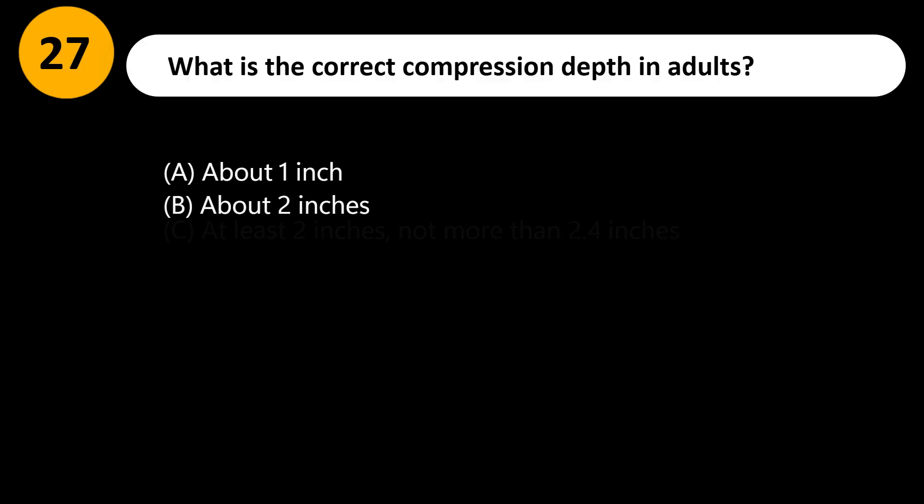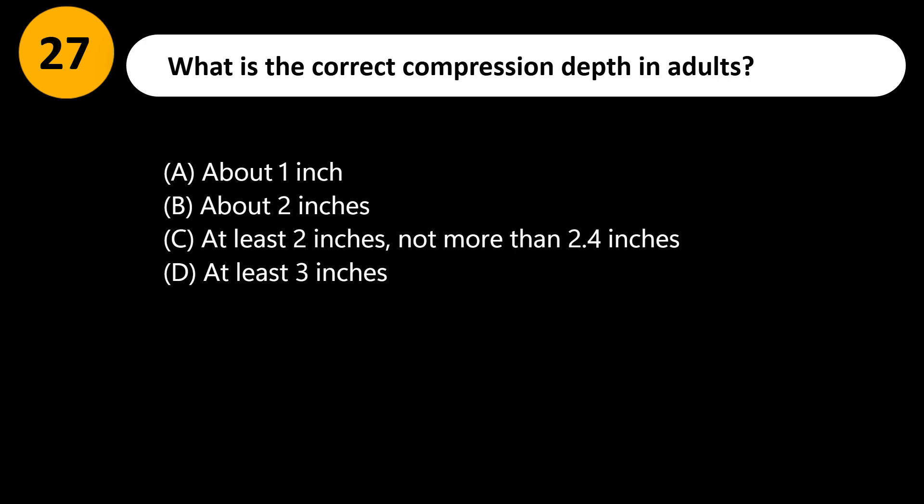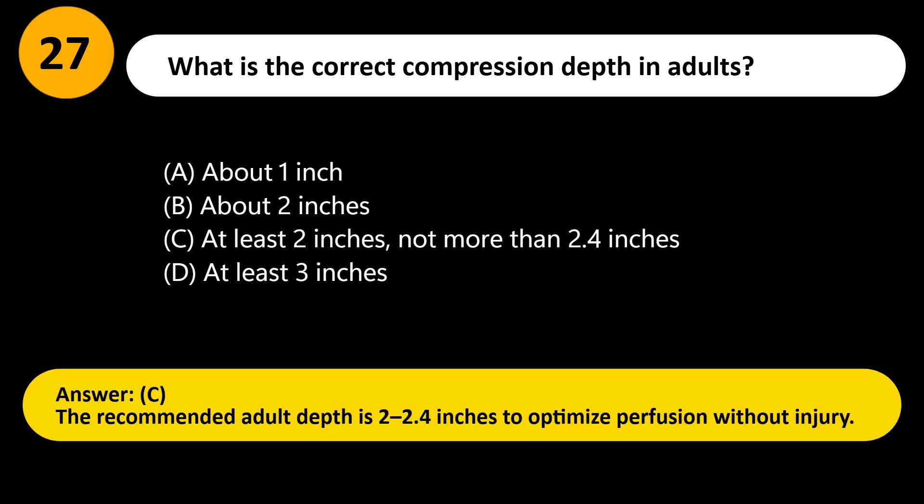What is the correct compression depth in adults? A) About 1 inch, B) About 2 inches, C) At least 2 inches, not more than 2.4 inches, D) At least 3 inches. Answer: C. The recommended adult depth is 2 to 2.4 inches to optimize perfusion without injury.